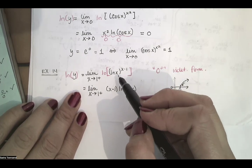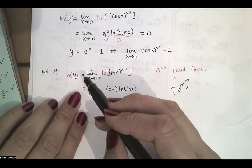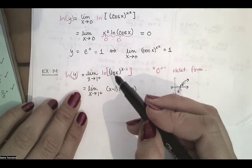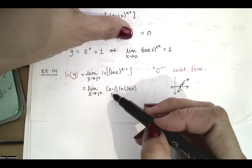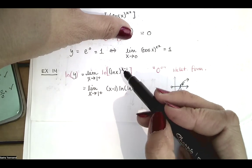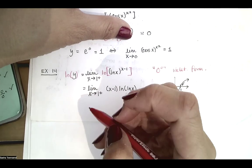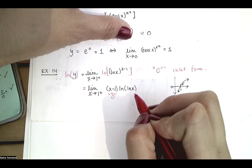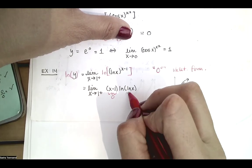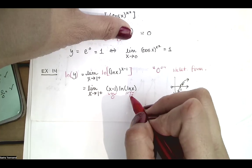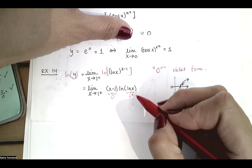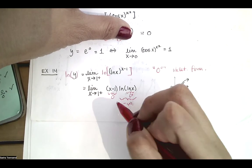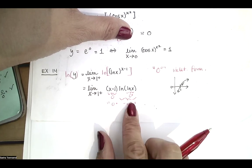To handle that 0 to the 0 indeterminate form, we set y equal to the limit that we're looking for, take the log of both sides, and use the property that log of a to the n is n times the log of a, bringing the exponent down in front. Now x minus 1 is still approaching 0, and the natural log of x is also approaching 0. Taking the log of a tiny positive number goes to negative infinity, so this entire expression goes to negative infinity. What we have now is a 0 times negative infinity indeterminate form.